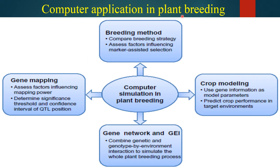Computer application in plant breeding: Computer simulation in plant breeding has so many applications. One is plant breeding methods — comparing breeding strategies, assessing factors influencing marker-assisted selection, crop modeling, using gene information as model parameters to predict crop performance in target environments, gene networks, and GEI — combining genetic and genotype-by-environment interaction to simulate the whole plant breeding process.